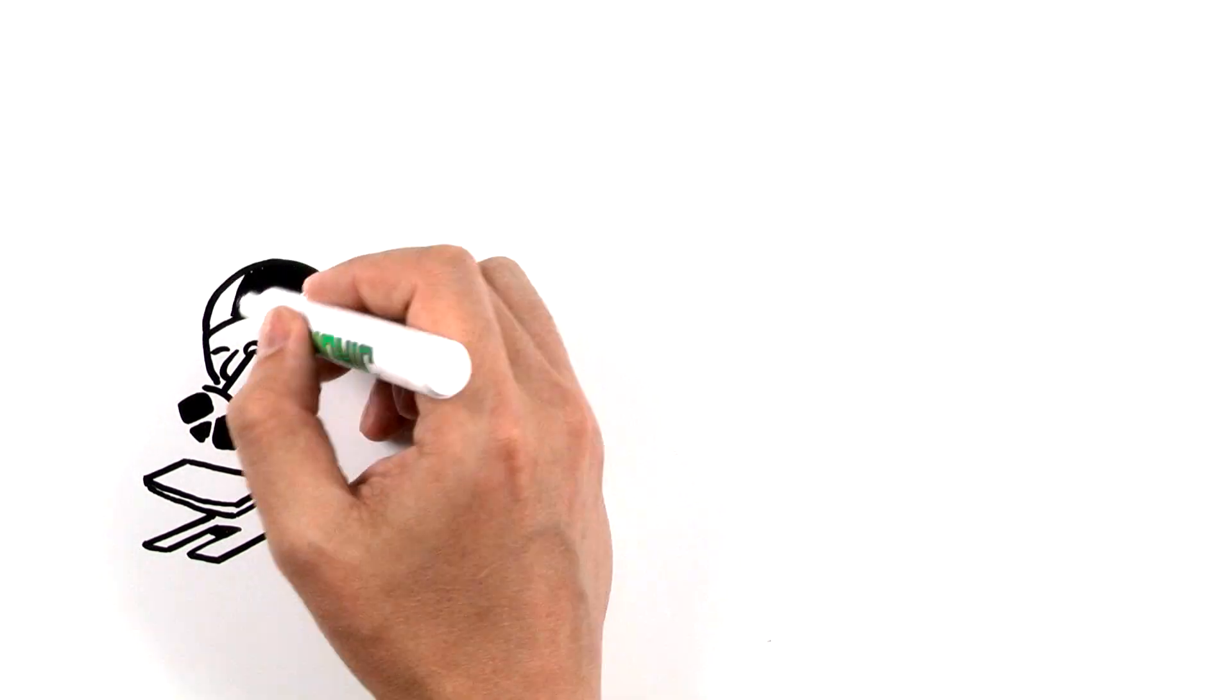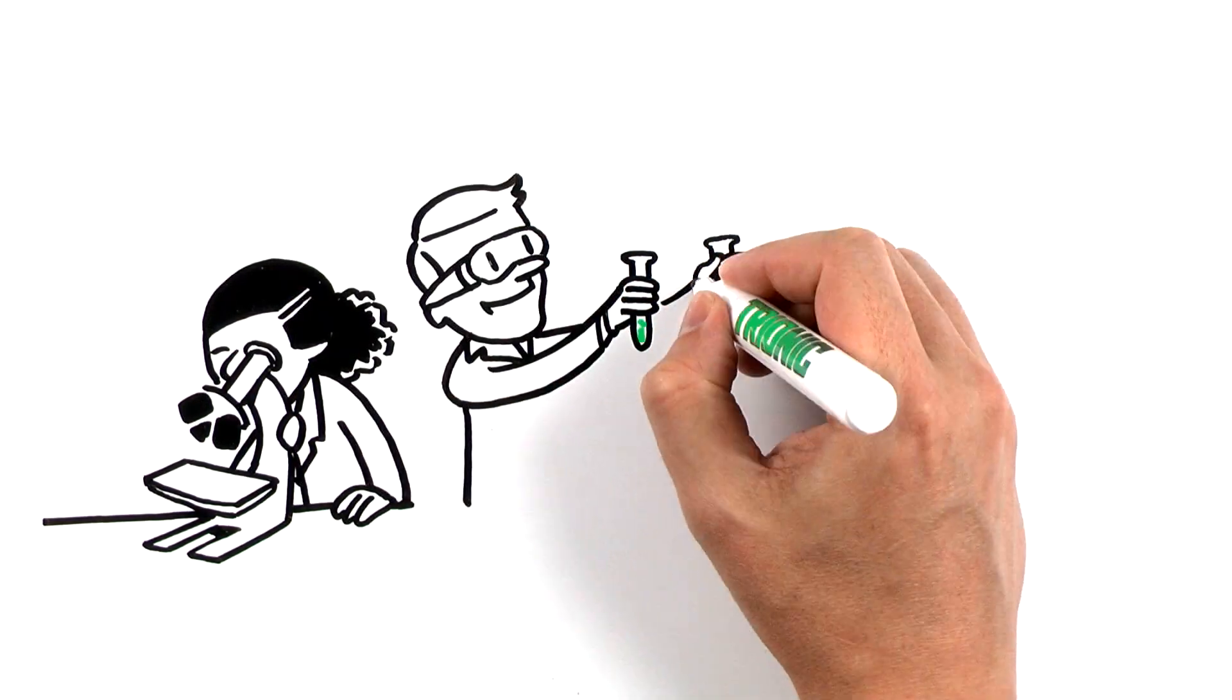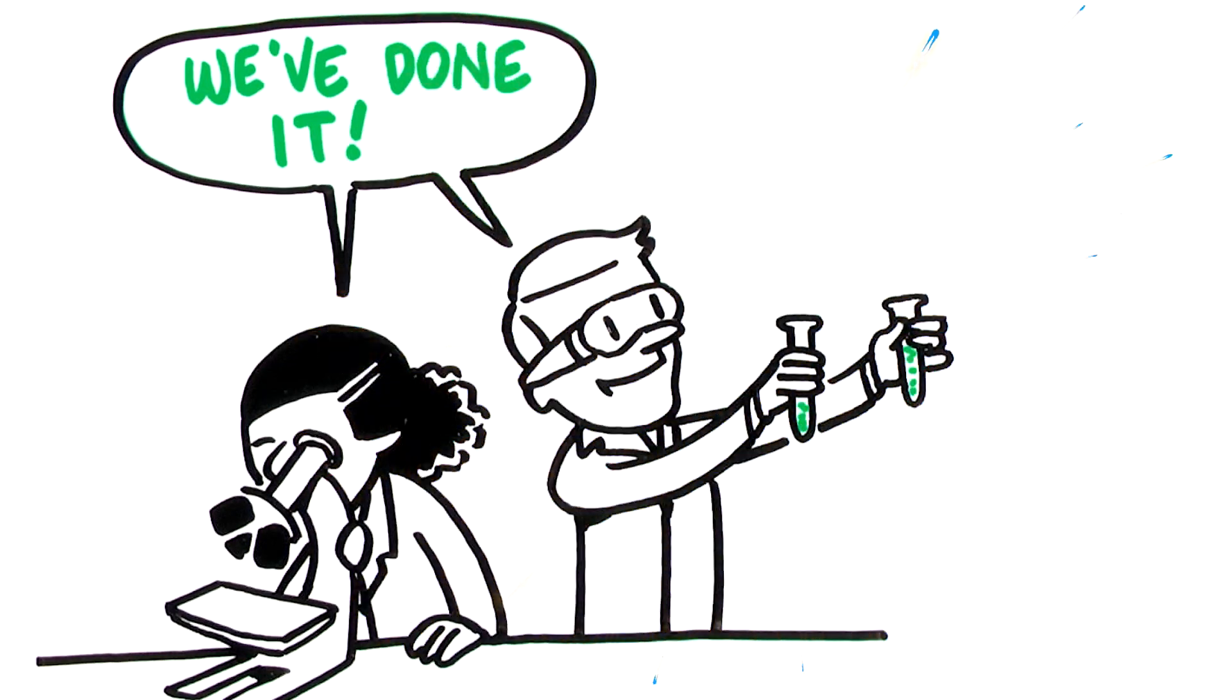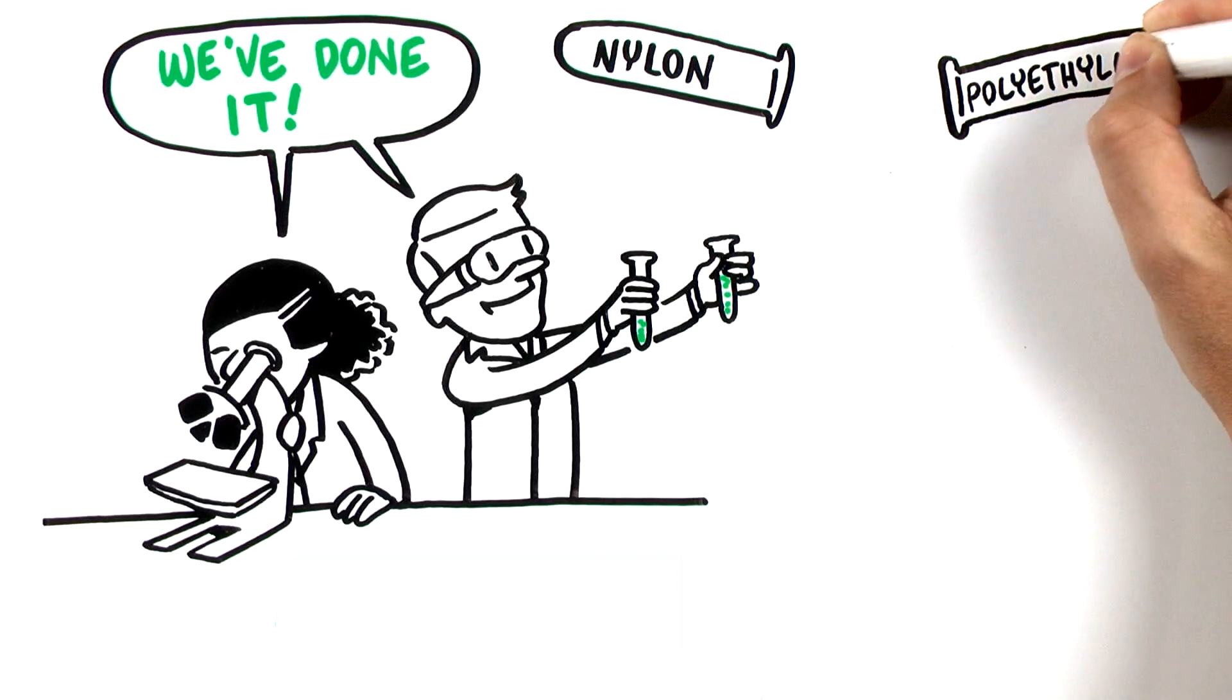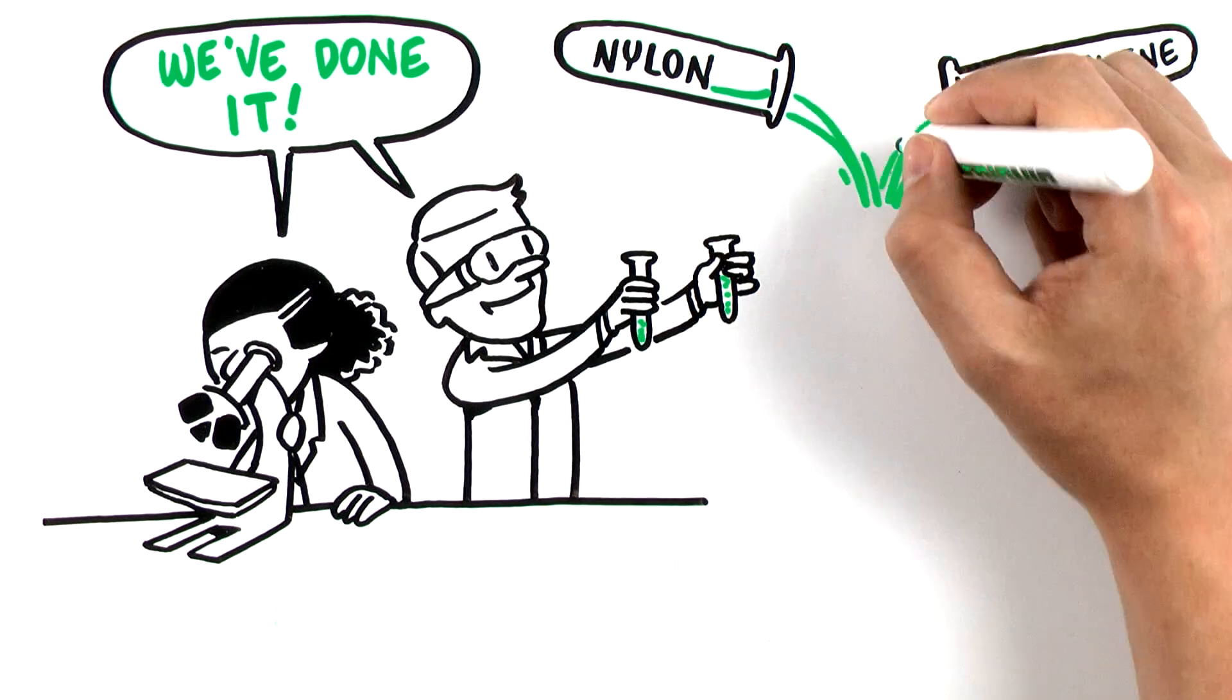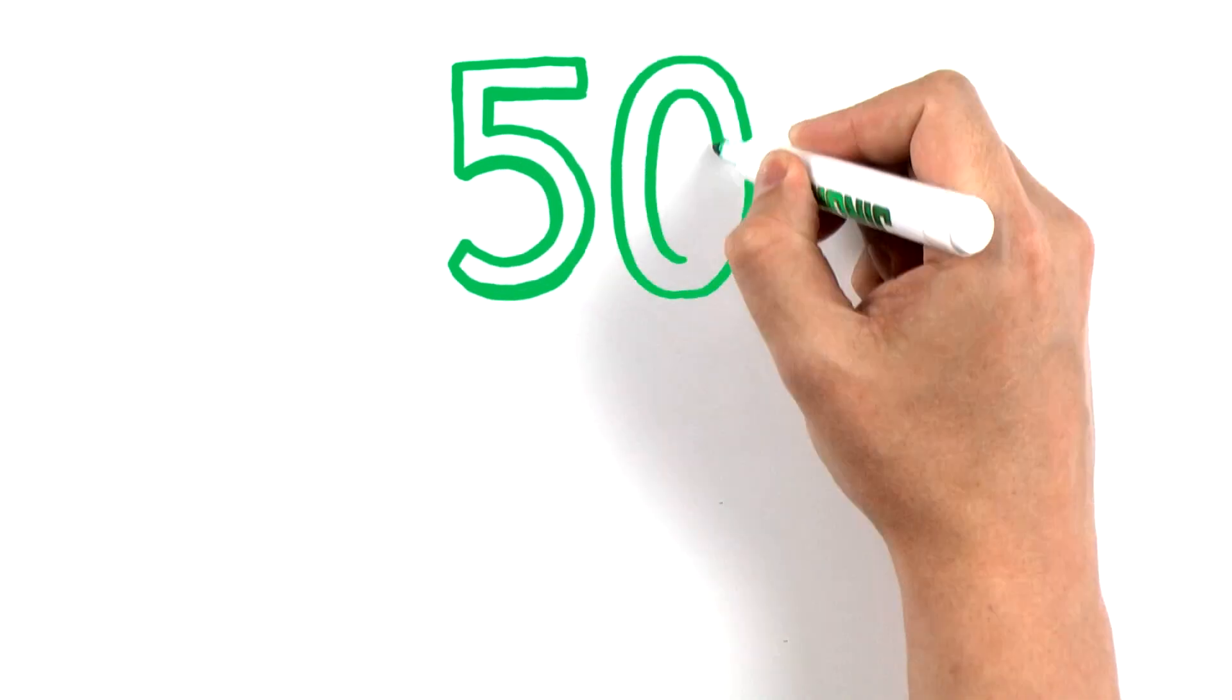Sport Group scientists have achieved a chemical process that creates the molecular fusion of nylon and polyethylene. They have finally unlocked the secret to mixing these opposing materials into a single polymer, creating a fiber that is both strong and soft and 50% more wear resistant.